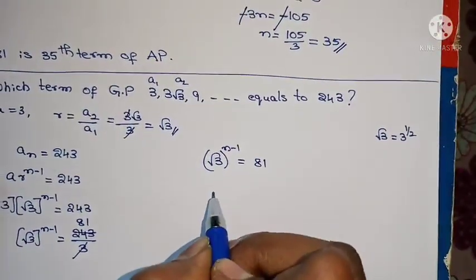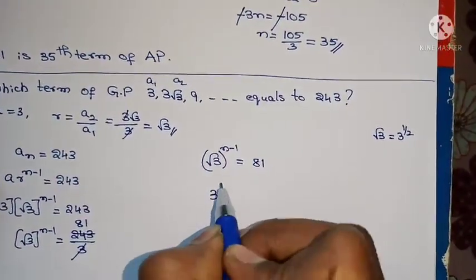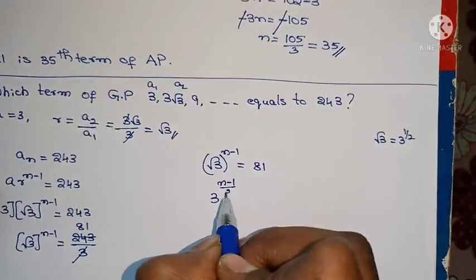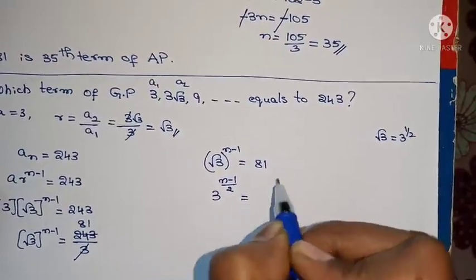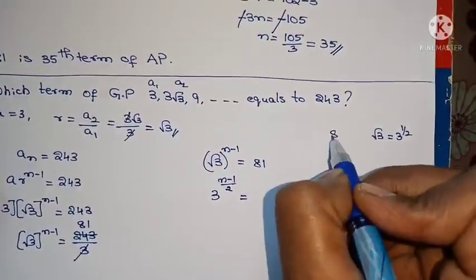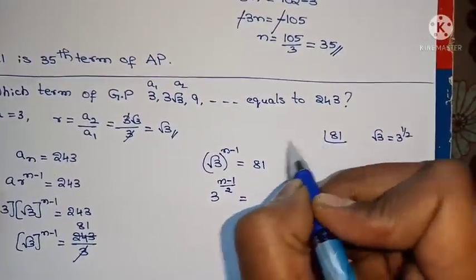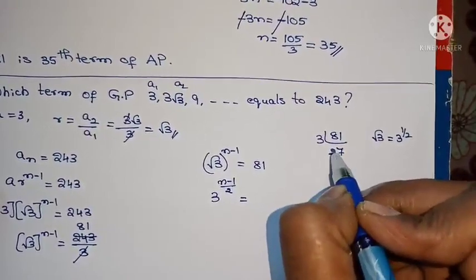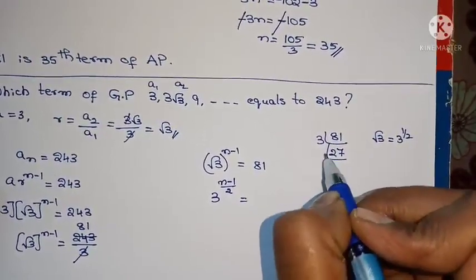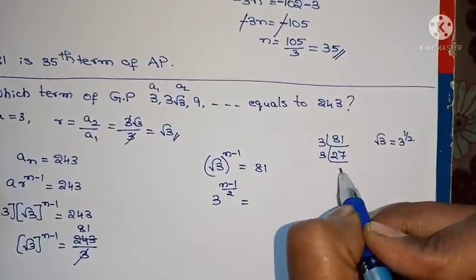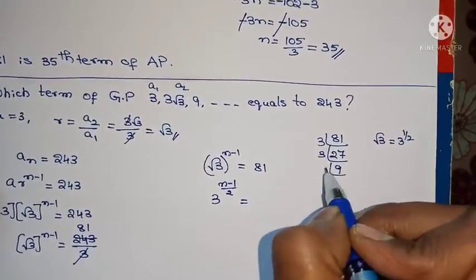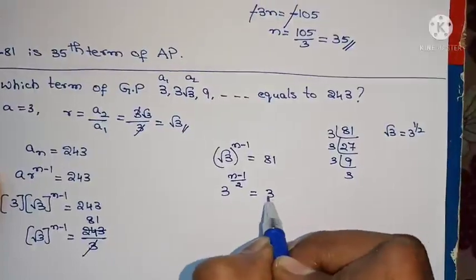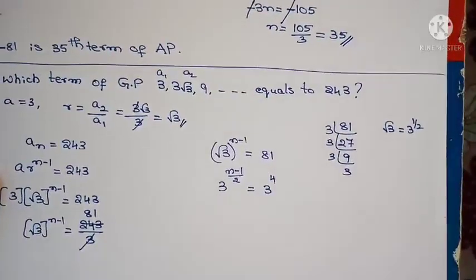Since root means half, √3 equals 3^(1/2). So 3^((n-1)/2) equals 81. Now factorising 81: 81 equals 3 to the power 4.